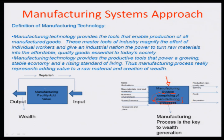A manufacturing facility adds value to raw materials. There are inputs to the manufacturing facility — for example, raw material cost and availability, business environment, sales fluctuations, which determine the level of production needed, as well as resources, plans, and social pressure. The outputs are things like production rate, quality, delivery lead times, profits, and reputation of the organization.